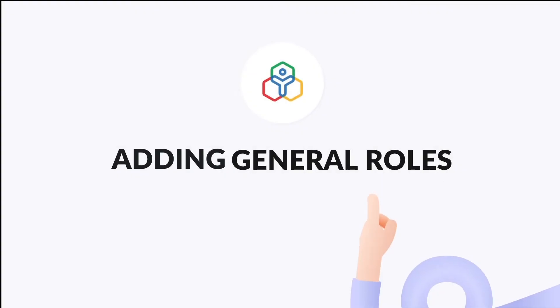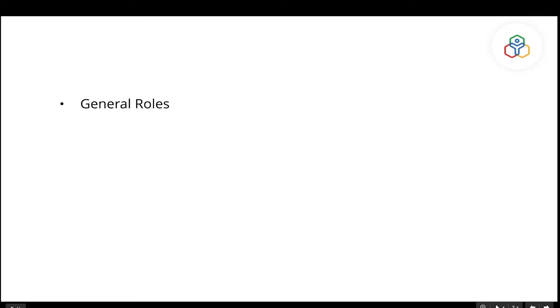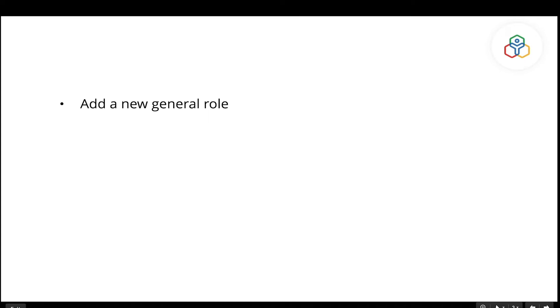In Zoho People, roles form the basis for all permissions and actions an employee can perform. So it is important to create the appropriate roles, define applicable permissions, and tag employees to the right roles. Roles in Zoho People can be classified as general roles and specific roles. In this video, we will focus on how to add a new general role, define permissions, and tag employees to the added role.